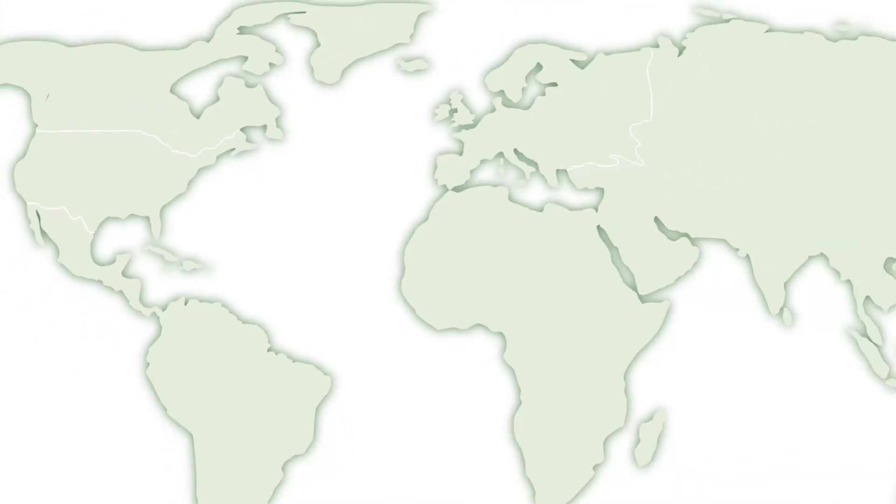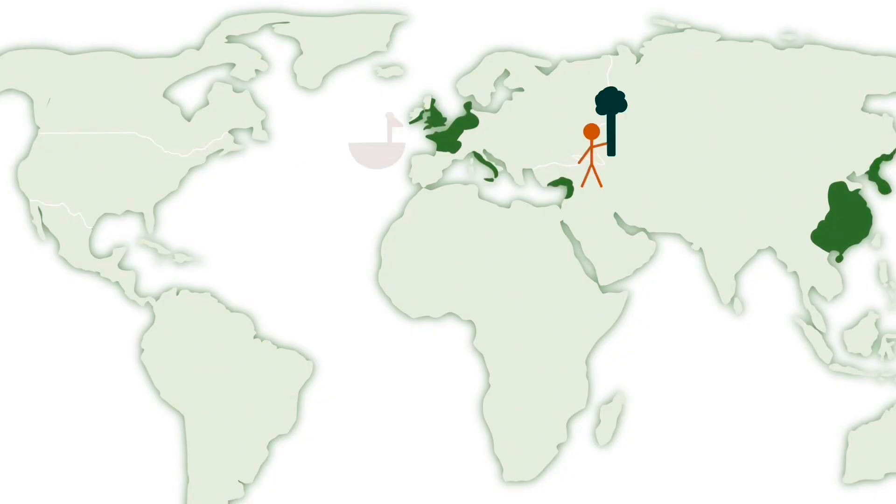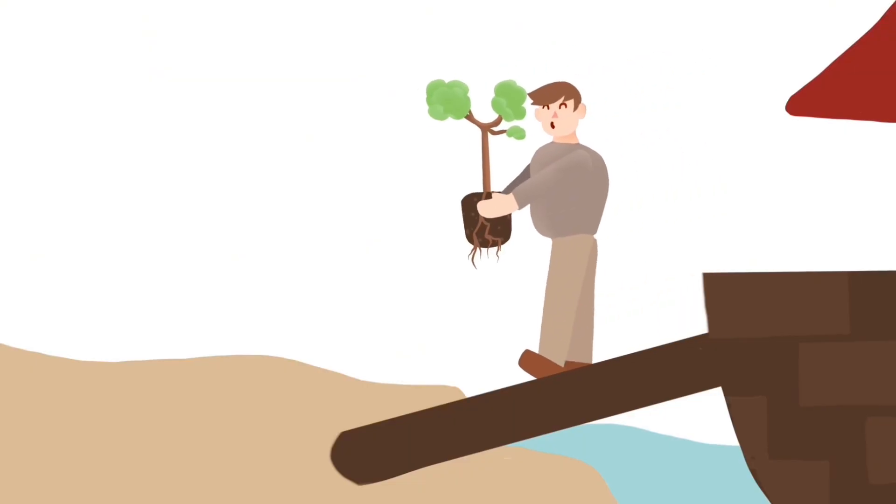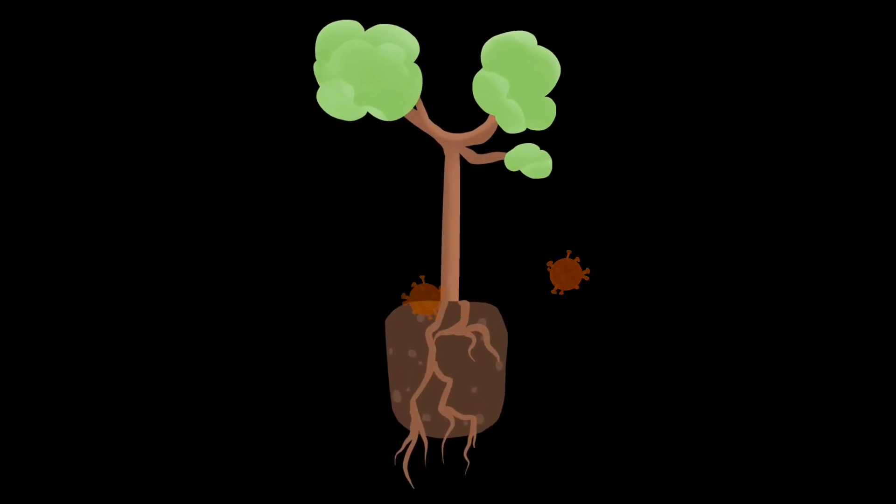There were other chestnut species growing in Europe and Asia, and in the 1800s, people started importing them to the U.S. What they didn't realize is that they were also bringing new chestnut diseases with them.